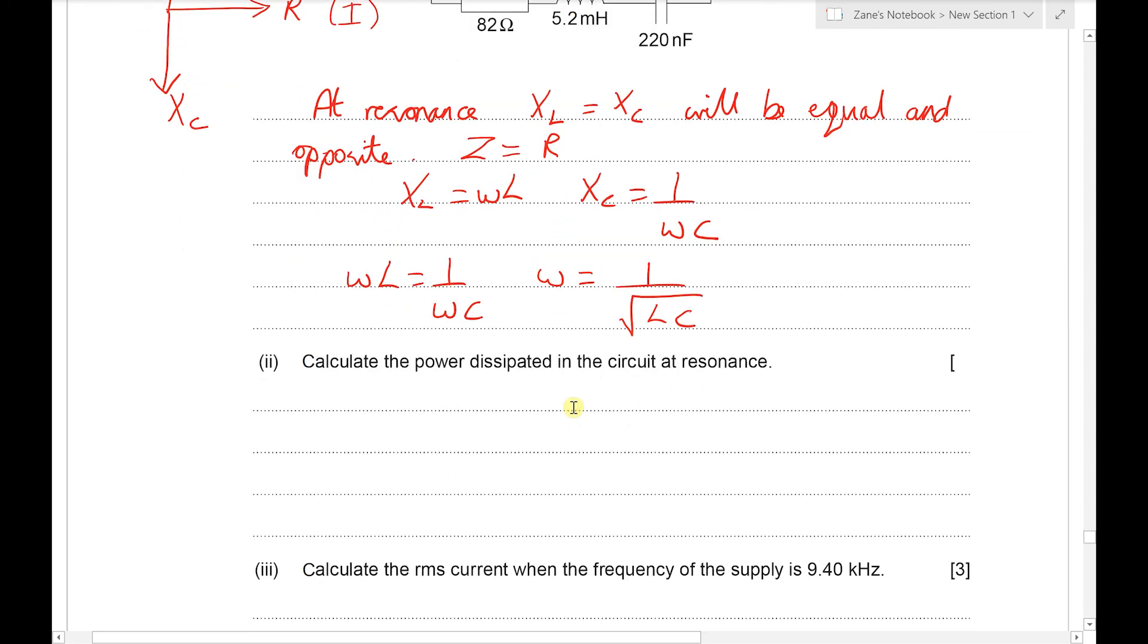I'm going to calculate the power dissipated in the circuit at resonance. Well we need to know that in the AC circuits at resonance there's going to be no power in either the capacitor or the inductor. We can simply use the power for the resistor so we've got P equals V² over R. Since we have the potential difference of 12 volts on the resistance of 82 ohms, that will give us 1.76 watts.